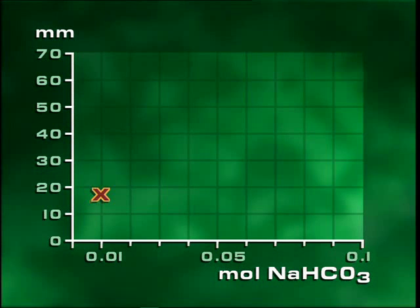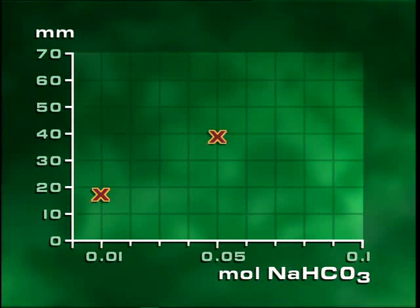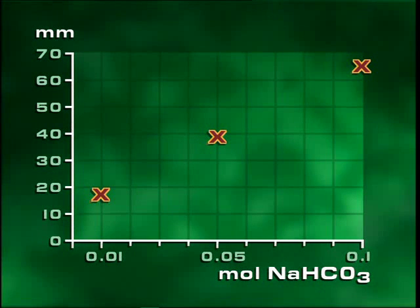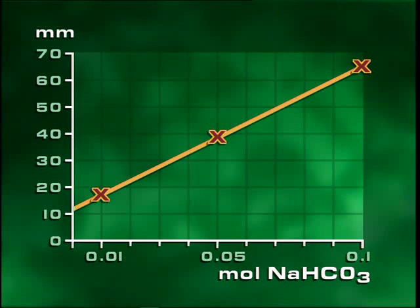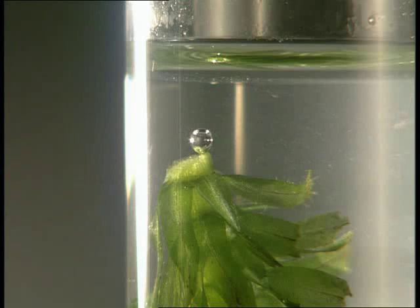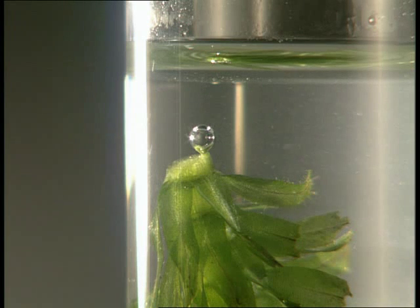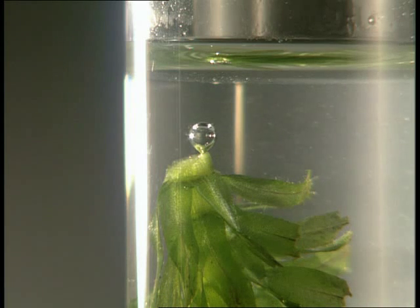With a 0.01 molar hydrogen carbonate solution, the bubble is 19 millimetres. At a concentration of 0.05, the bubble is 39 millimetres. At 0.1 molar, the bubble is 64 millimetres. As CO2 concentration increases, so does the size of the oxygen bubble. How has increasing the CO2 level affected the rate of photosynthesis? What other factors might affect the rate, and how could you investigate?